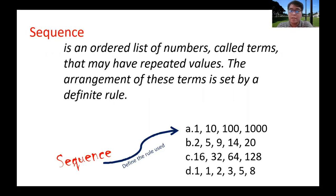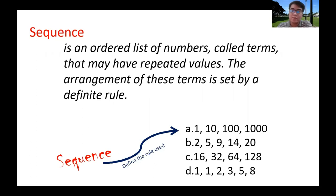For example, in sequence A — 1, 10, 100, and 1000 — the sequence is defined by the rule that the next term will be the first term times 10. So 1, then 1 times 10 is 10, then 10 times 10 is 100, then 100 times 10 is 1000.